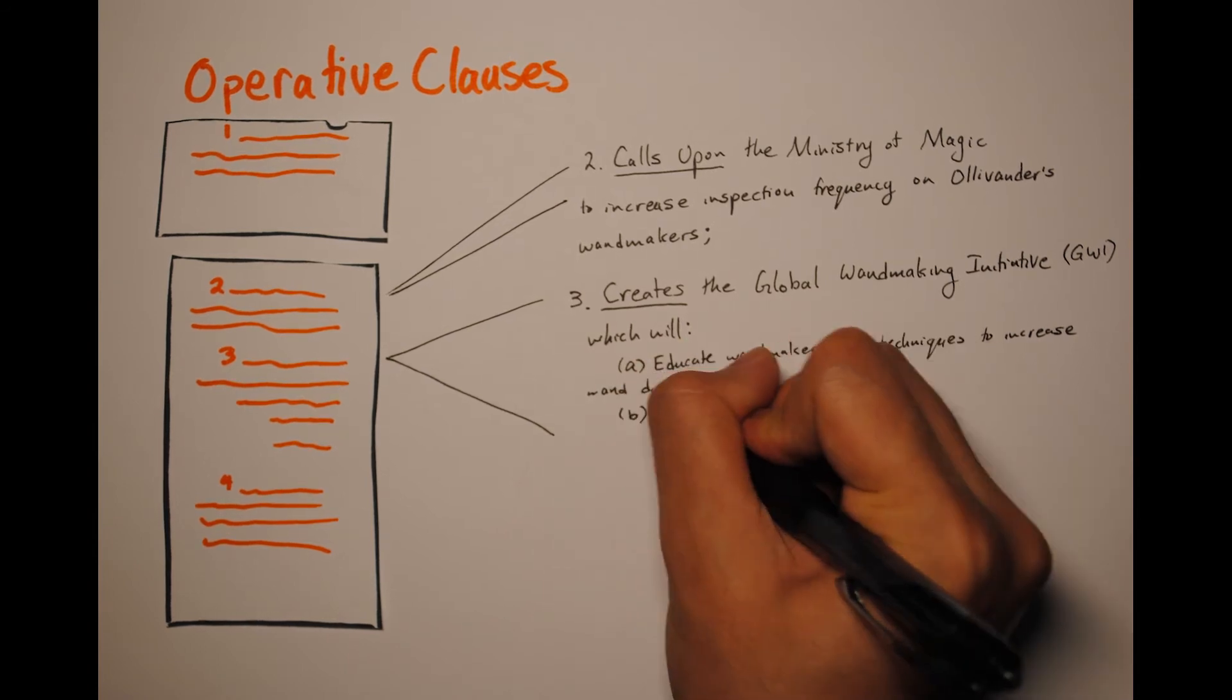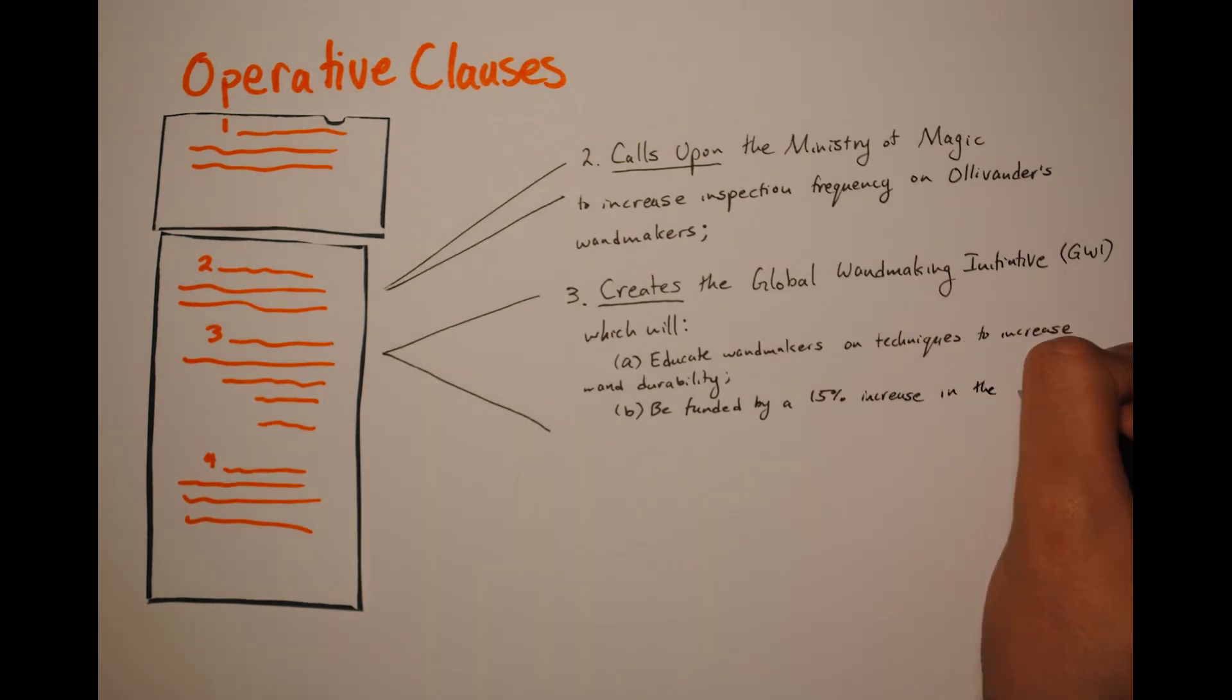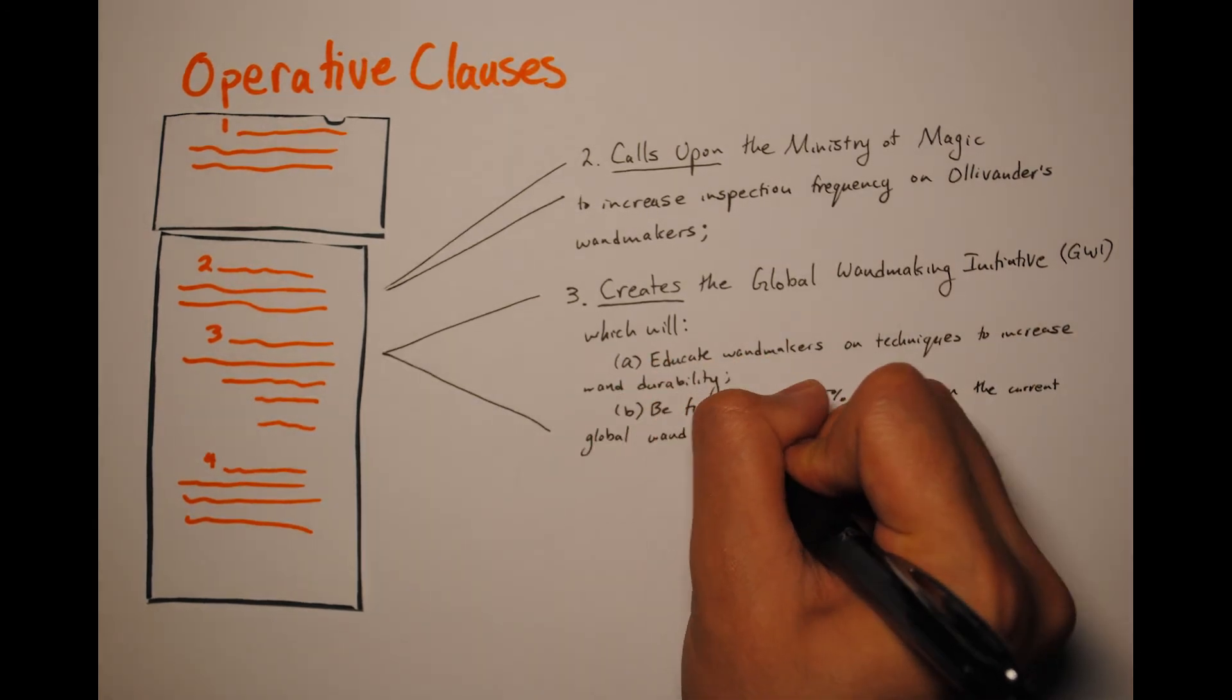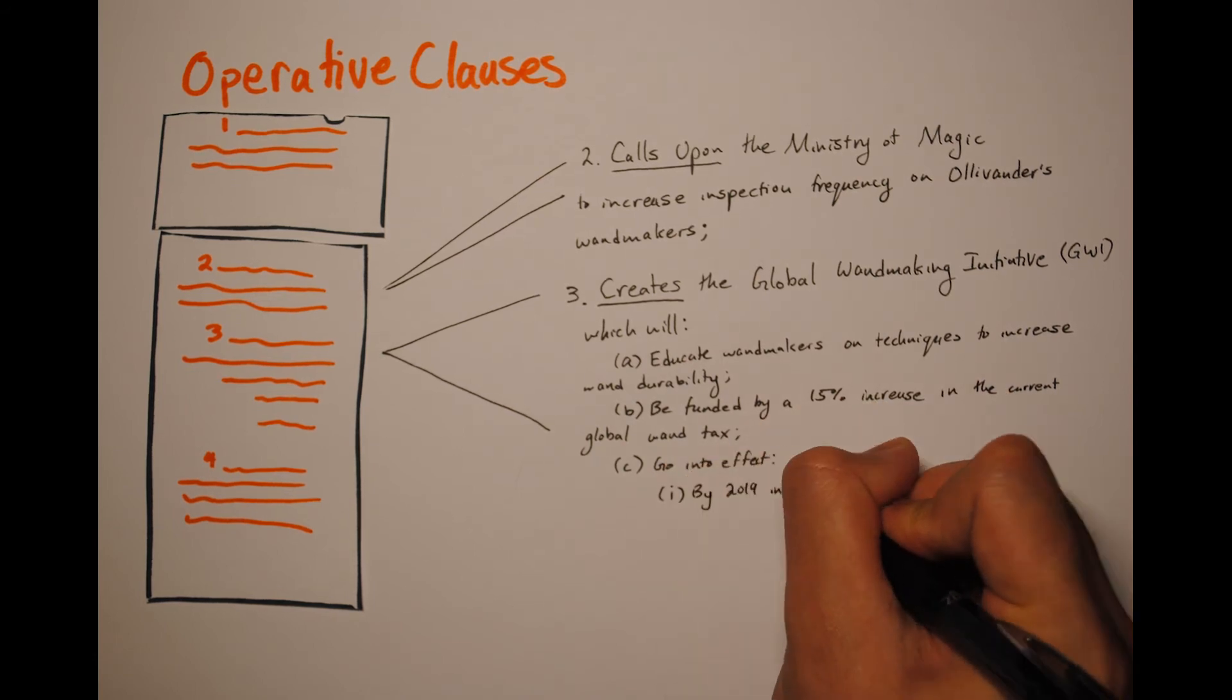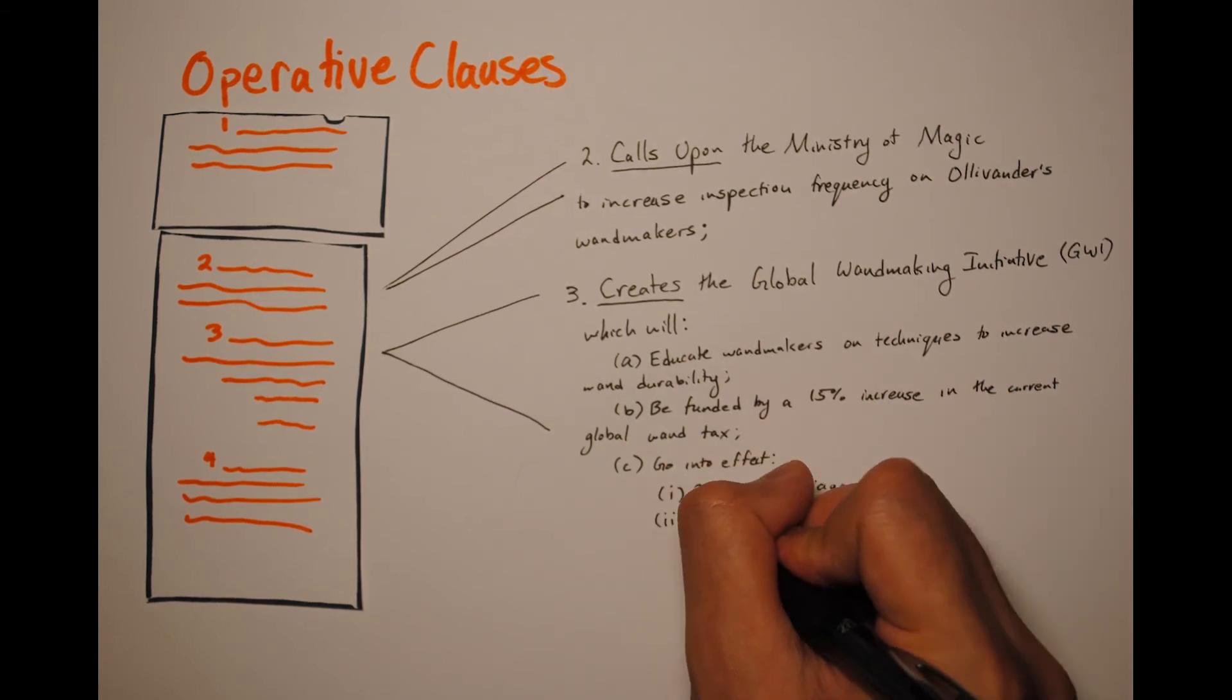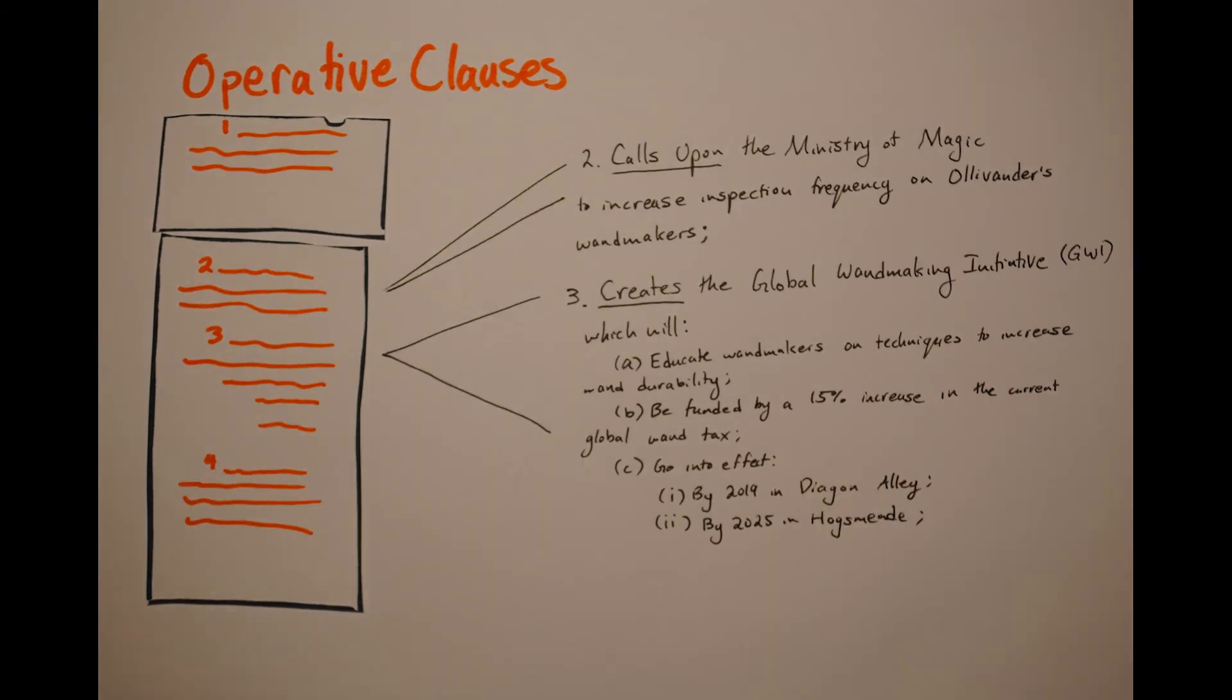Your operative clauses exist to provide solutions to a problem. You can form a task force. You can put money into scientific research. You can condemn the actions of other countries or organizations. Above all, be creative. Outline solutions that nobody's ever thought of before, not even the real UN.